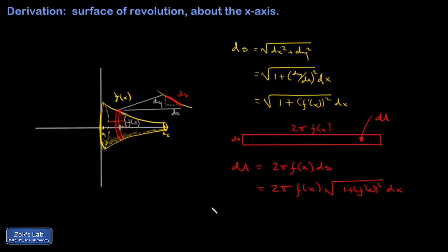And then finally, I have an expression for the surface area for a curve that's revolved around the x-axis. The total area is going to be the sum of all the area contributions, and I'm going to go all the way from the starting value of x to the finishing value of x.